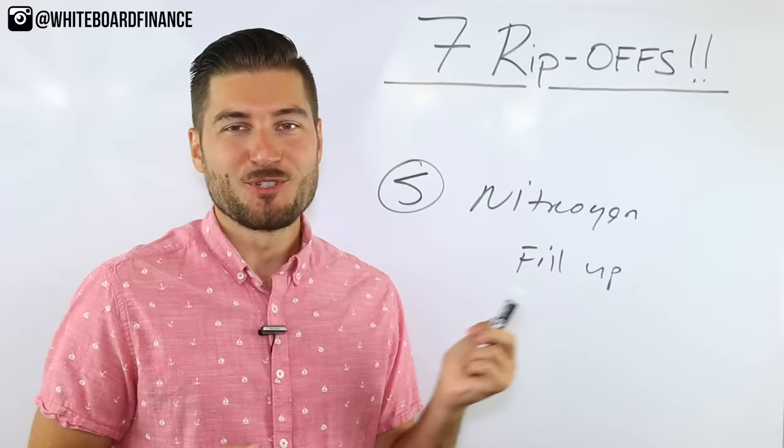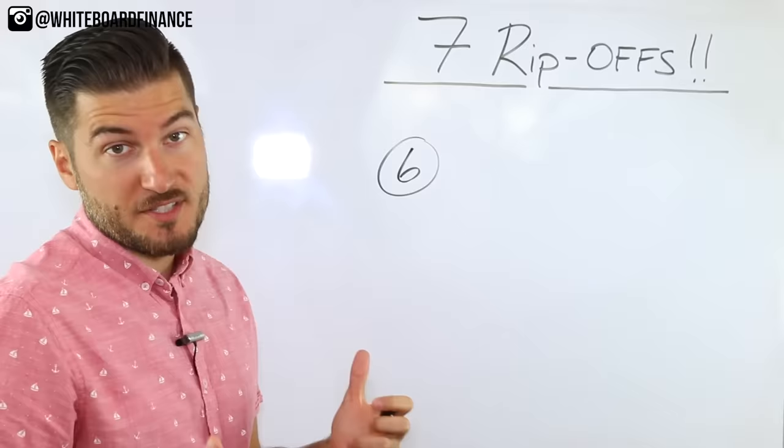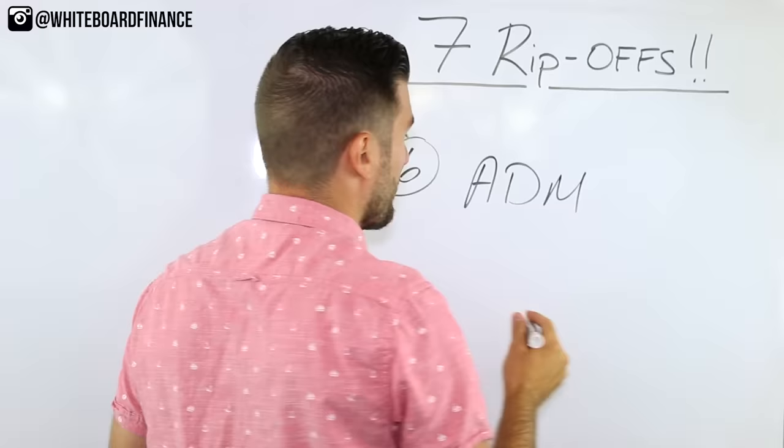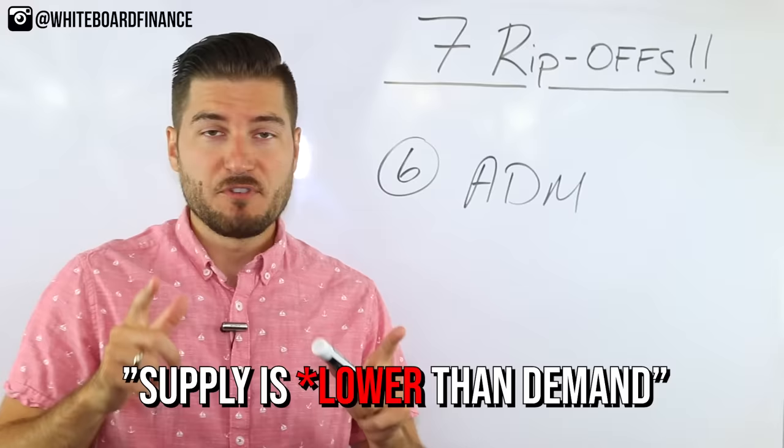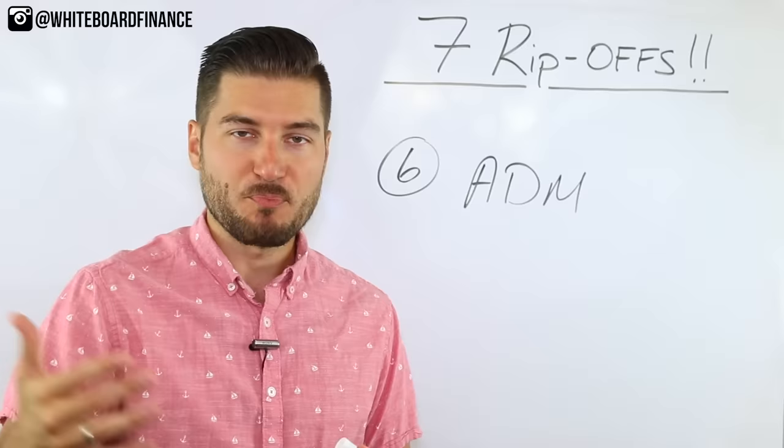Number six is ADM: additional dealer markup. You may not be familiar with this term depending on the type of cars that you buy, but this typically happens when you're looking at a more desirable vehicle where supply is higher than demand. If you haven't checked out my supply and demand video, go check that out right now. But ultimately this happens where this is 100 percent profit for the dealership. This is literally 100 percent profit, zero overhead goes into this. They're literally just marking up the price of the car because of the demand.